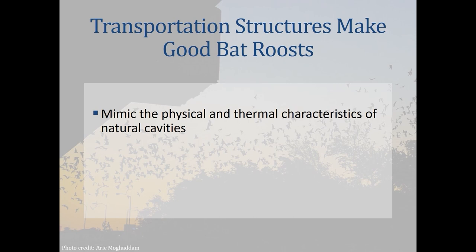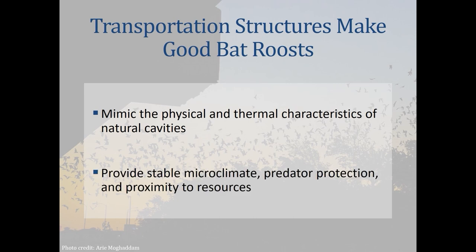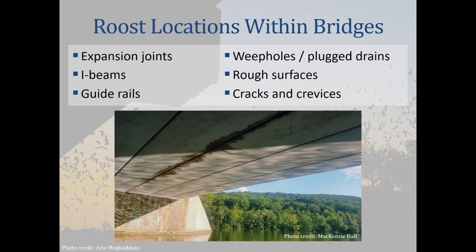Transportation structures can provide a stable microclimate, predator protection, and proximity to elemental resources such as access to drinking water and foraging habitat. The thermal stability of many transportation structures likely factors into reproductive females selecting them for maternity roosts. Bridges function as permanent artificial roosts — for example, the Monksville Reservoir Bridge in New Jersey serves as a little brown bat roost of more than 100 bats including pups. Roost locations within bridges may include expansion joints, I-beams, guide rails, weep holes or plug drains, rough surfaces, and cracks and crevices.